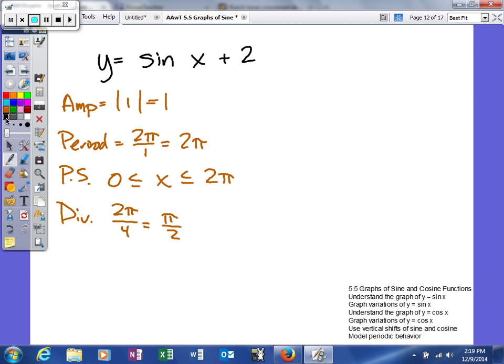Alright, so what we're going to do is graph it. This time we will start on 0, not because we always start on 0, but because that's the value right there. So we'll say 0, and we'll be at π/2, we'll be at π, we'll be at 3π/2, and lastly, we'll be at 2π.